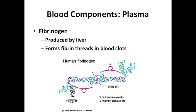Fibrinogen is our third plasma protein and is involved in blood clotting. It is the least abundant, but it's pretty important. Without fibrinogen, you could potentially bleed to death from something very simple — like a bruise or a small cut that most of us would deal with easily.